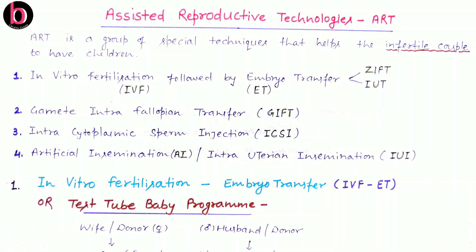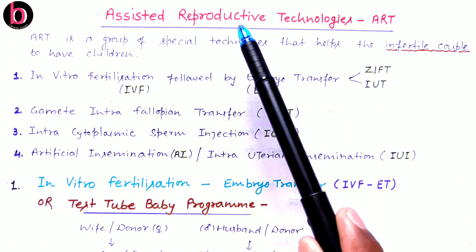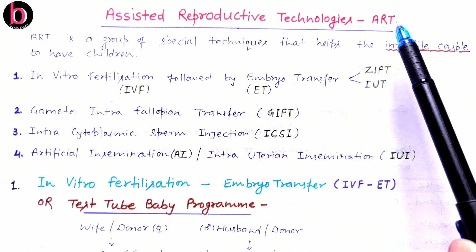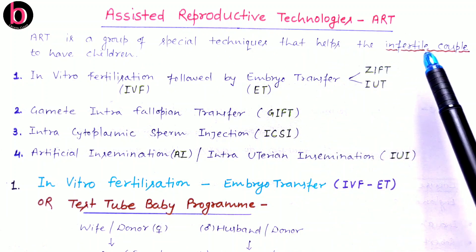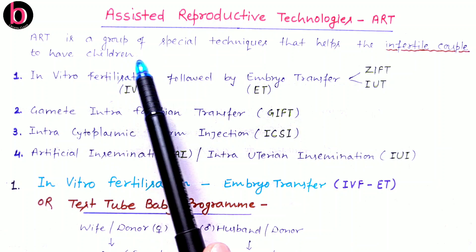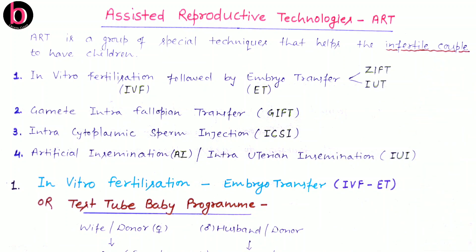In this video lecture we will discuss about Assisted Reproductive Technologies, also known as ART. ART is a group of special techniques that helps infertile couples to have children. Infertile couples are those who are unable to conceive or produce children even after two years of consecutive unprotected sexual cohabitation. Because of advancements in medical science, many methods have been developed to address such problems.